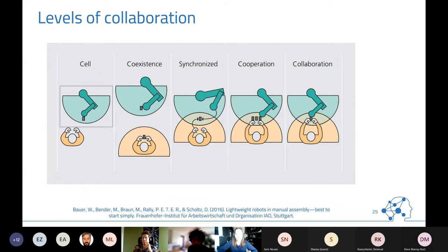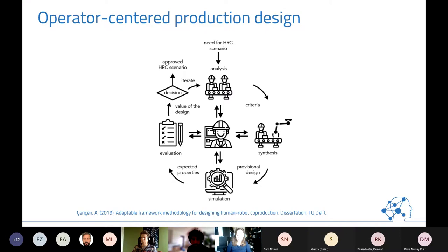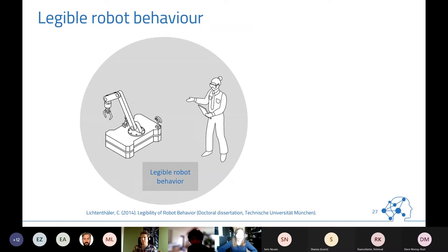The level of collaboration focuses more on the physical side: from totally separated — the normal case in nearly all industrial settings we inquire — to co-existing, synchronized, cooperative, or even fully collaborative. Coming to that shared physical space is still quite unique and involves a lot of effort in real industrial cases. There was a nice PhD thesis on operator-centered production design related to this work, which you can look up.